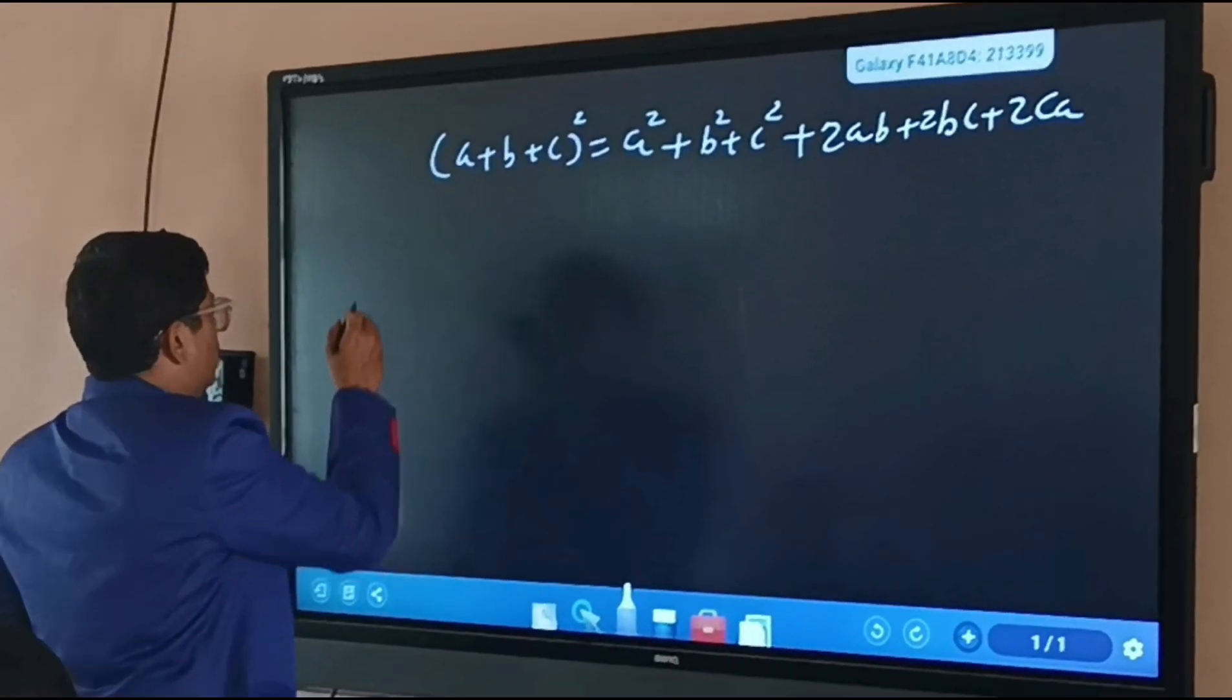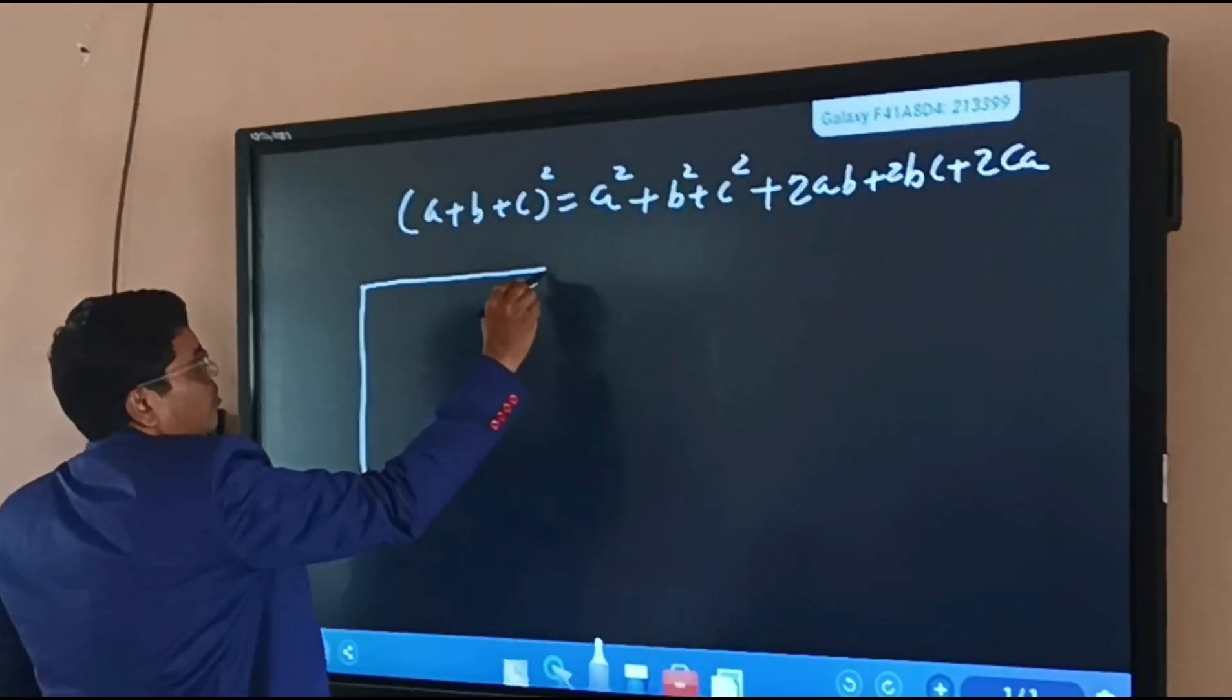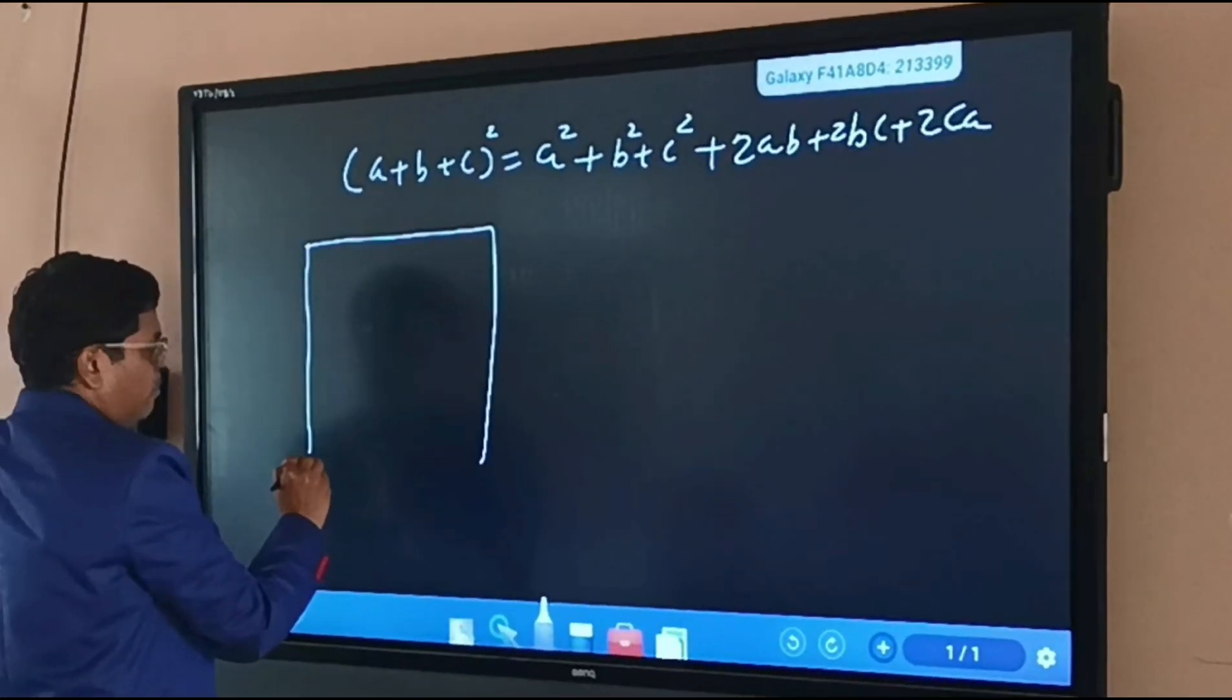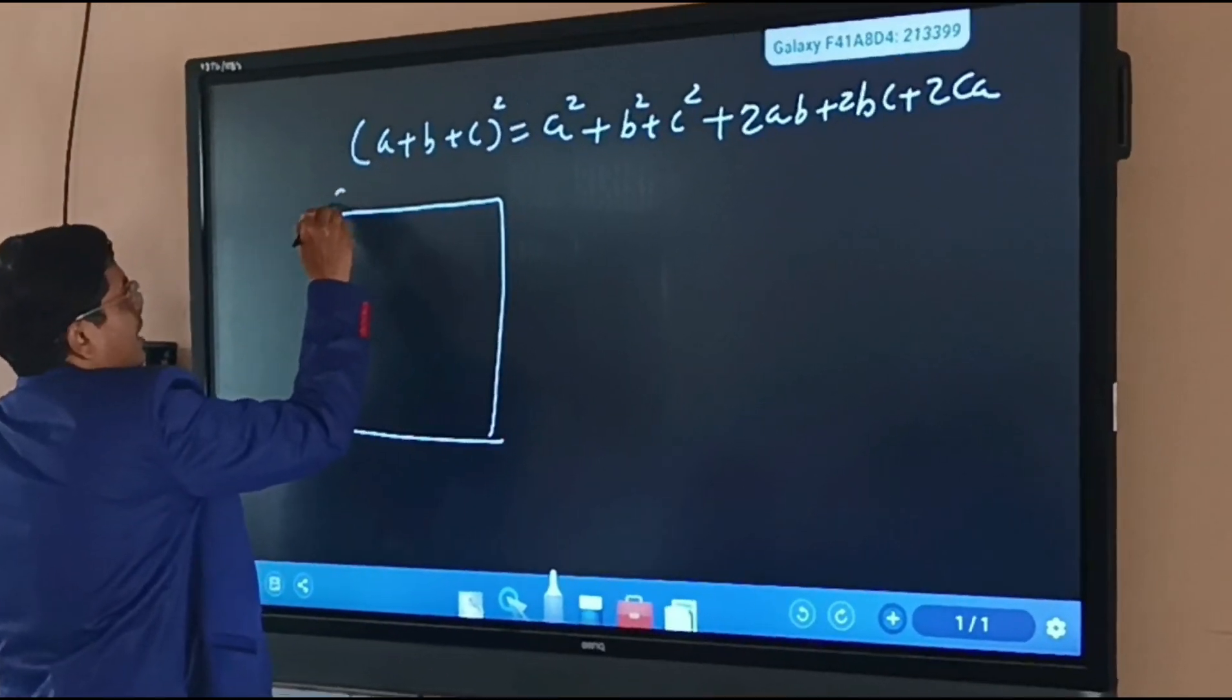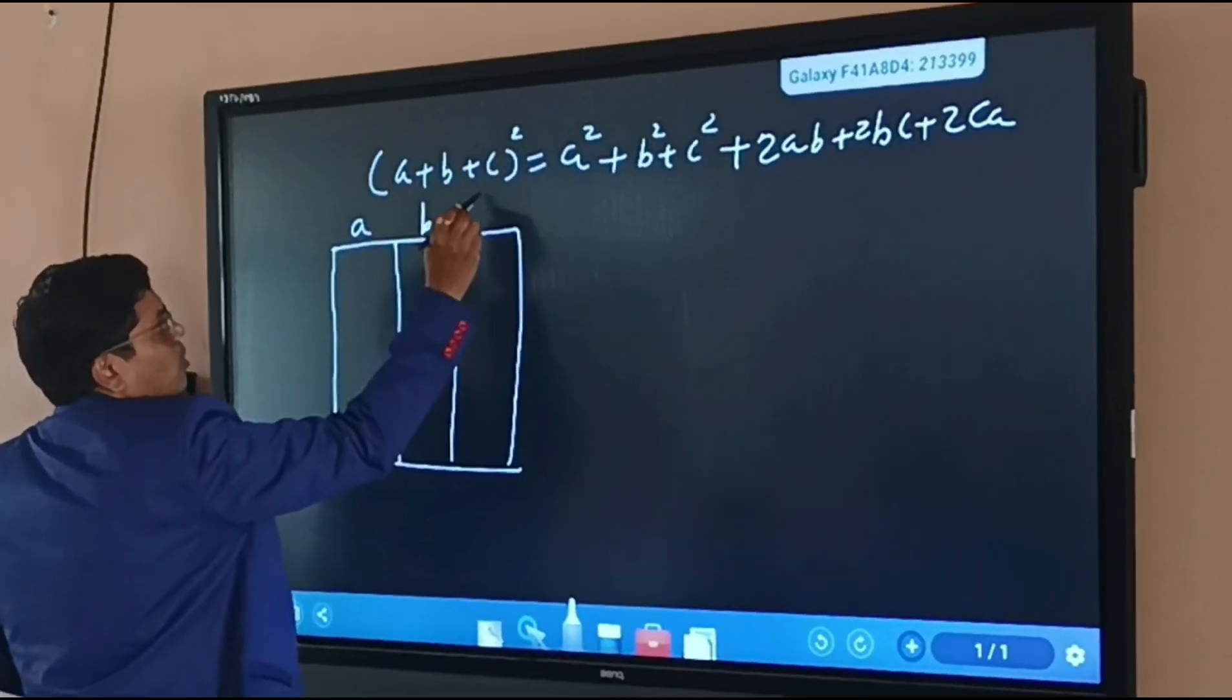So what we will do, we will draw here one square and we will divide this square into different parts like a, other is b, and the third is c.